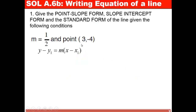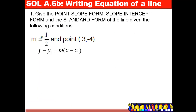Here is our first example. We have a slope and we have a point. We would like to write our equation into point-slope form, slope-intercept form, and standard form. First, let's give our answer in point-slope form. I have the slope — I can replace m by 1/2. I have a point — this will be my x₁ and this will be my y₁.